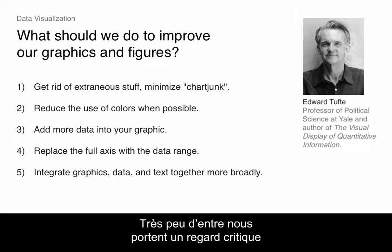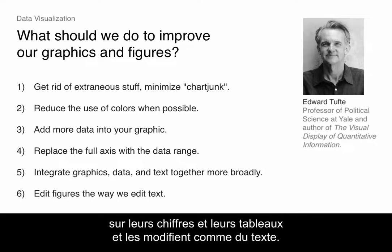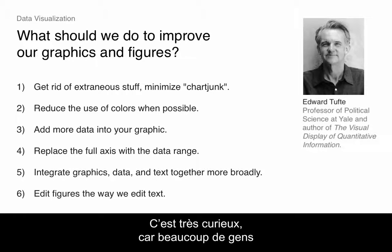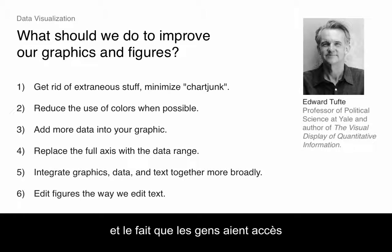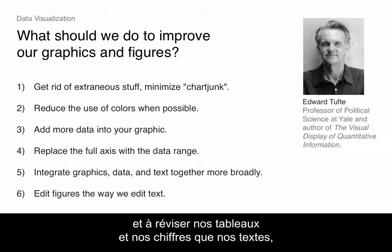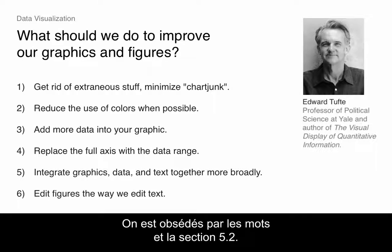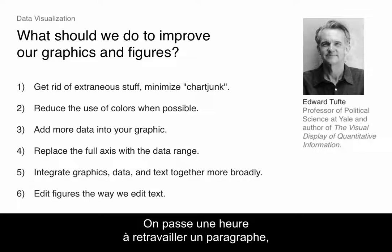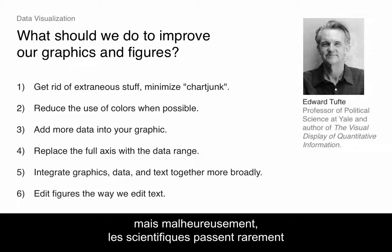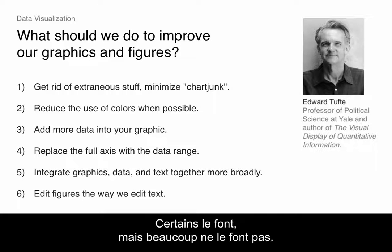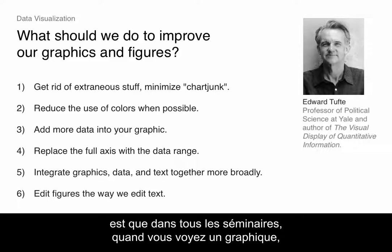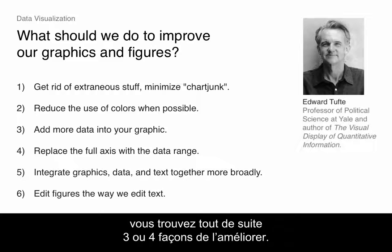What too few of us do with our figures and tables is sit down critically with them and edit them the way we edit text. That's really strange, because a lot of people look at our tables and figures, and far fewer actually carefully read every word of an article — especially with the rise of graphical abstracts and summary figures being what gets circulated. We should be spending as much time iterating on and revising our figures as we do our text. But we obsess over words in a paragraph and spend an hour reworking it, while rarely do many social scientists sit down for hours obsessing over every detail of their figures. The evidence is that in almost any seminar, you can look at a figure and immediately think of three or four ways to improve it.